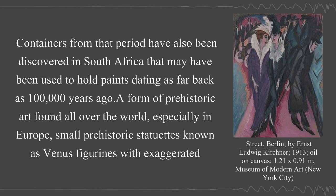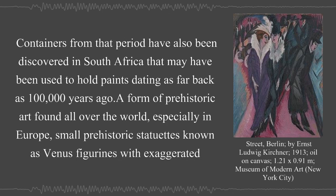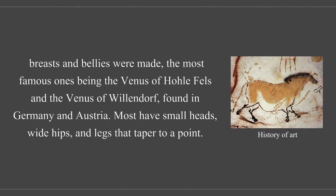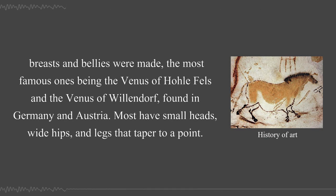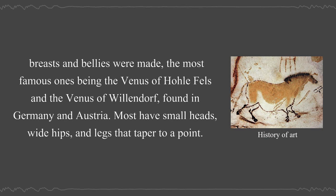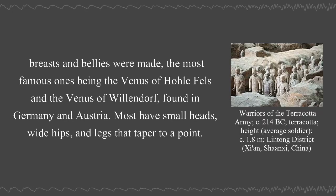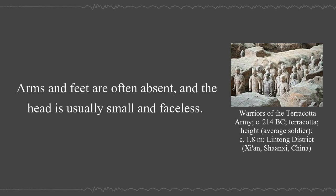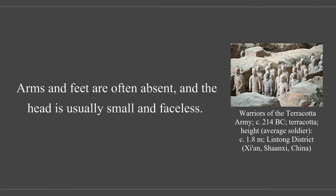A form of prehistoric art found all over the world, especially in Europe, small prehistoric statuettes known as Venus figurines with exaggerated breasts and bellies were made, the most famous ones being the Venus of Hohlfels and the Venus of Willendorf, found in Germany and Austria. Most have small heads, wide hips, and legs that taper to a point. Arms and feet are often absent, and the head is usually small and faceless.